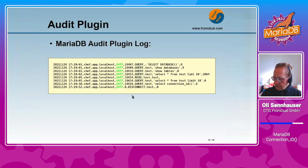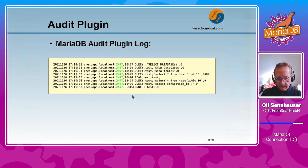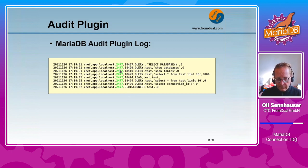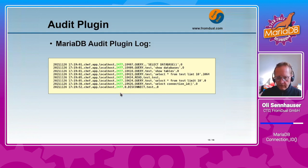Another feature we have in MariaDB is the MariaDB audit plugin. In the audit plugin log, the connection ID is added — it's here at the fifth position. This is the connection ID; I think this is the query ID, then the type, and the query itself. So again in the audit plugin we can see the connection ID.